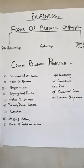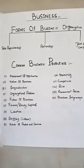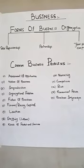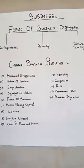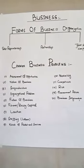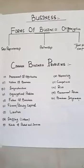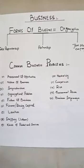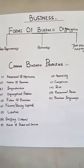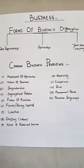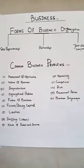Number three is infrastructure. Infrastructure includes all the facilities, such as roads, power plants, transportation, and communication systems. Number four is organizational problems — businessmen must choose the form of business organization.